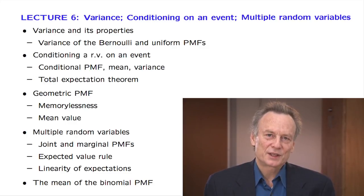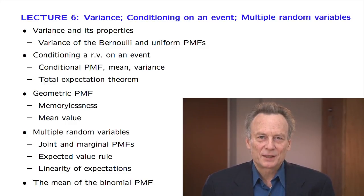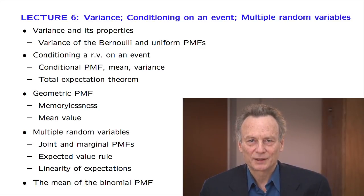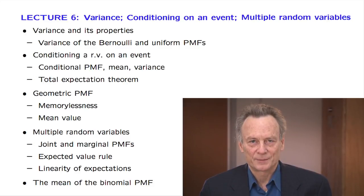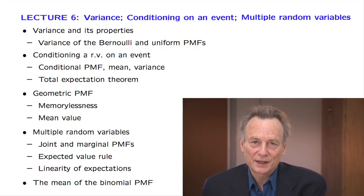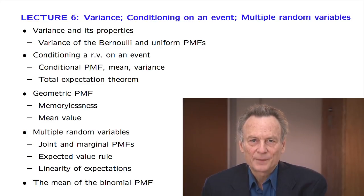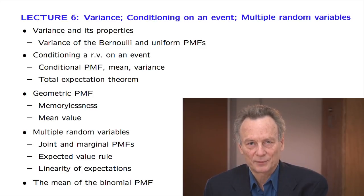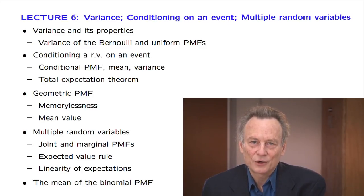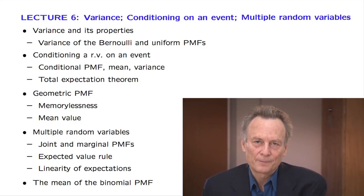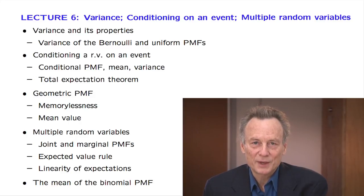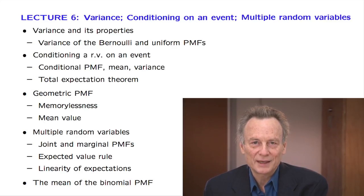In the second part, we discuss conditioning. Every probabilistic concept or result has a conditional counterpart, and this is true for probability mass functions, expectations, and variances. We define these conditional counterparts and then develop the total expectation theorem. This is a powerful tool that extends our familiar total probability theorem and allows us to divide and conquer when we calculate expectations. We then take the opportunity to dive deeper into the properties of geometric random variables and use a trick based on the total expectation theorem to calculate their mean.